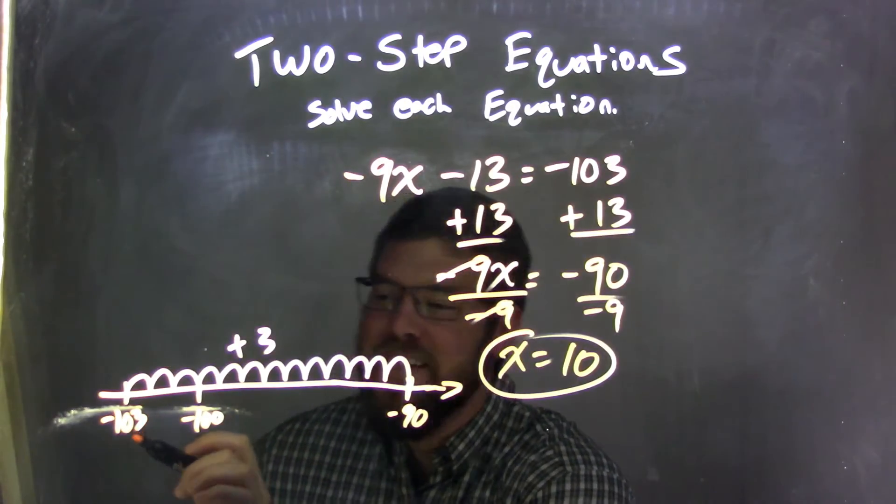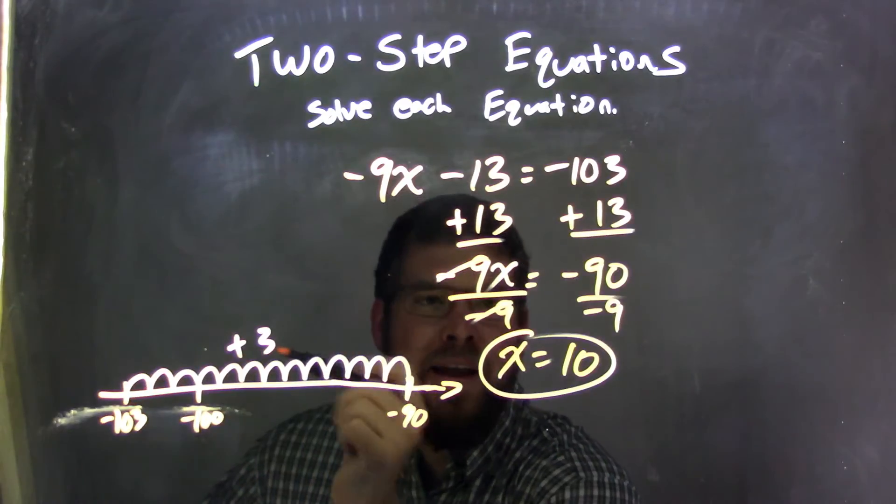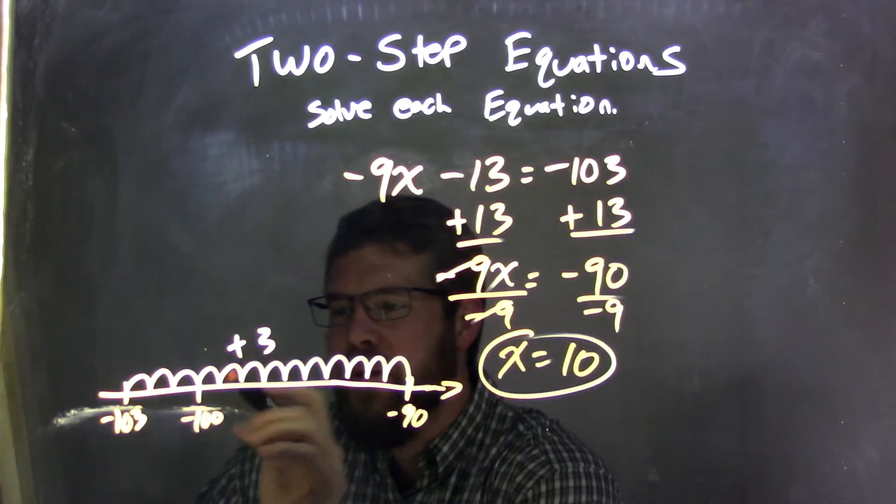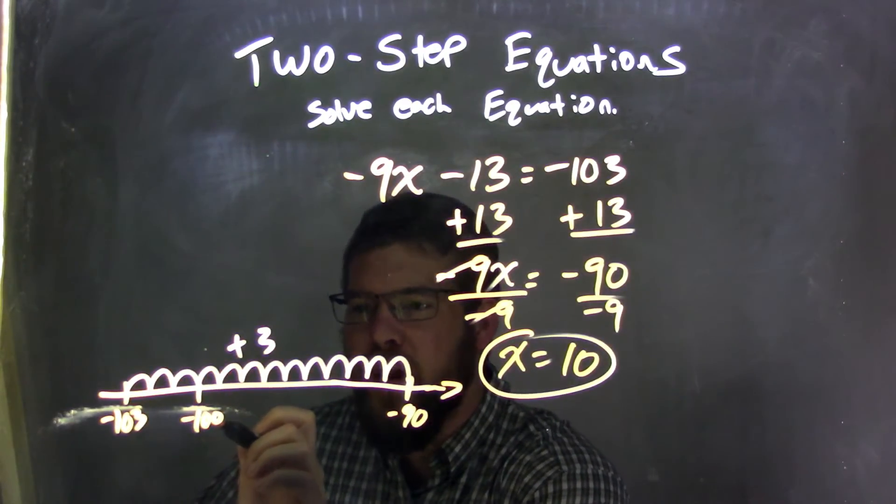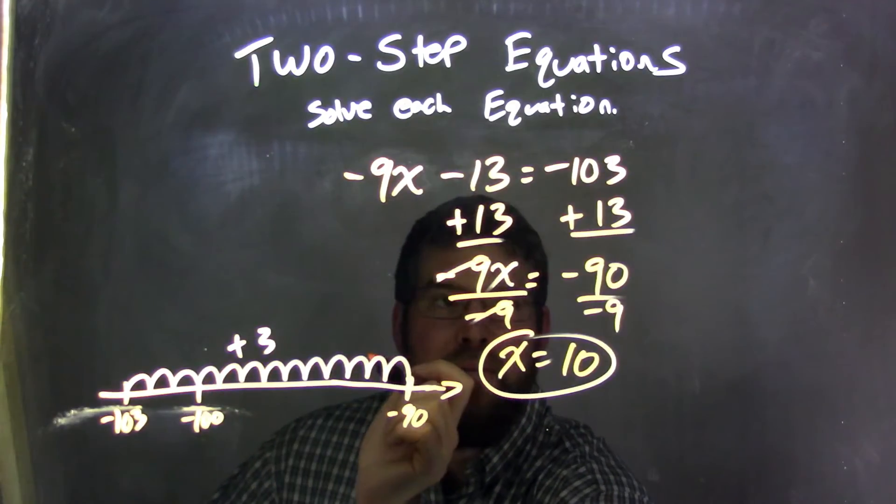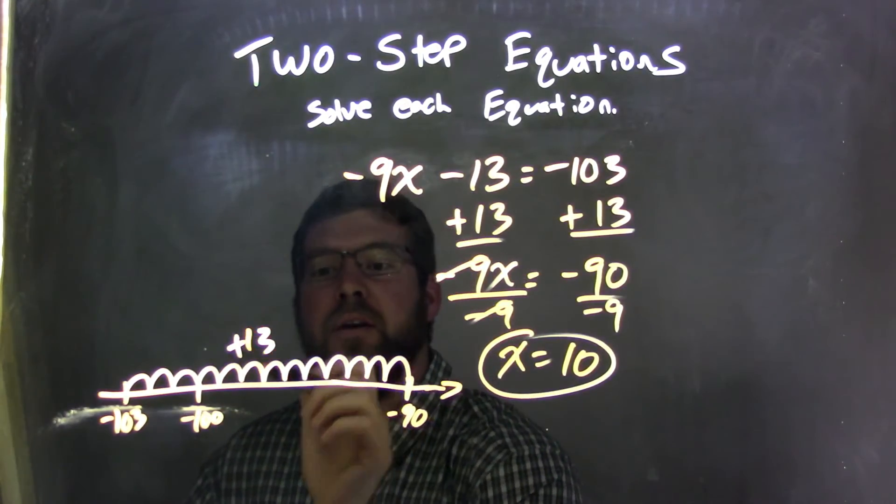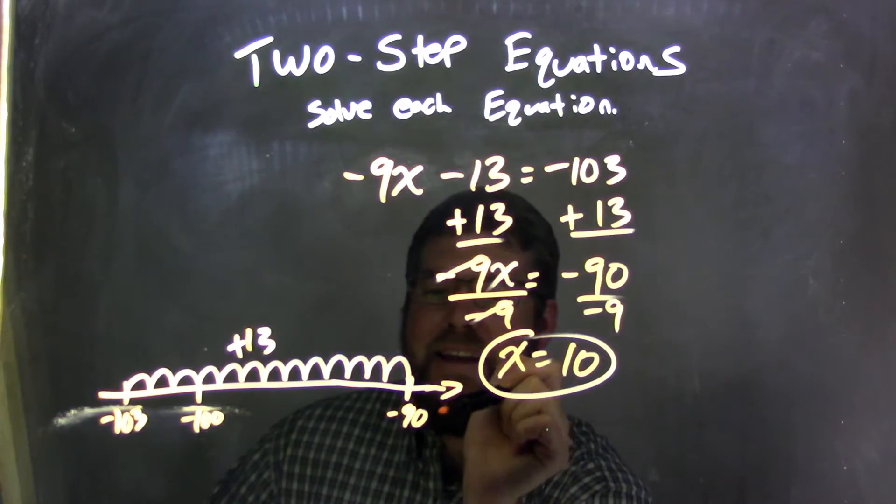Negative 103, I move to the right 13 units. I do 3 really quickly because that gets me to negative 100, and then 10 more, because my total of what is plus 13 here, 10 more gets me to negative 90.